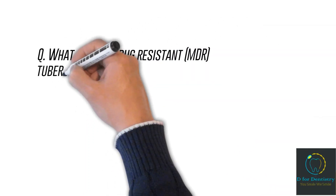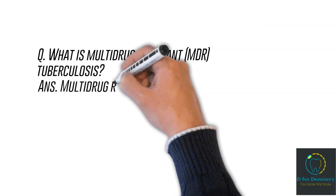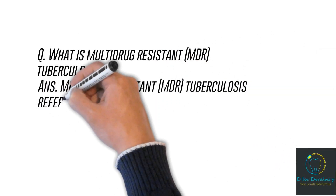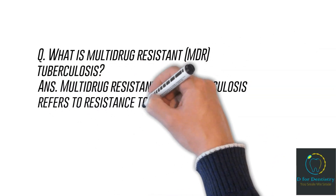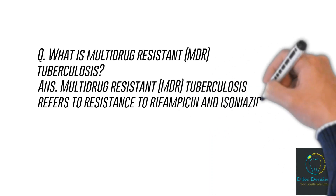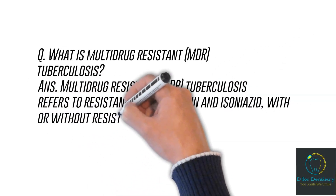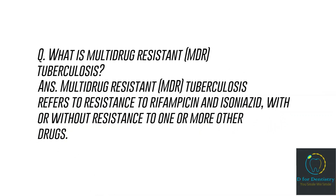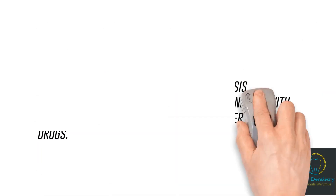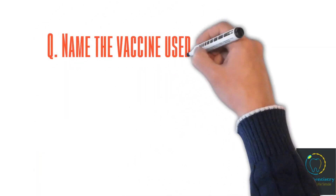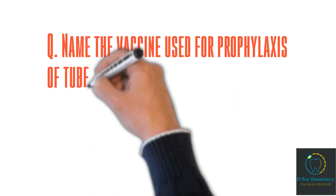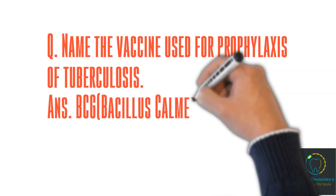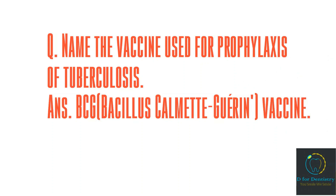Question: What is multi-drug resistant (MDR) tuberculosis? Answer: MDR tuberculosis refers to resistance to rifampicin and isoniazid, with or without resistance to one or more other drugs. Question: Name the vaccine used for prophylaxis of tuberculosis. Answer: Bacillus Calmette-Guérin, i.e., BCG vaccine.